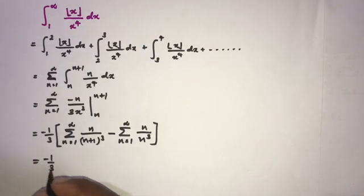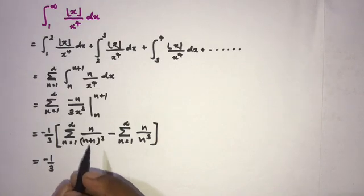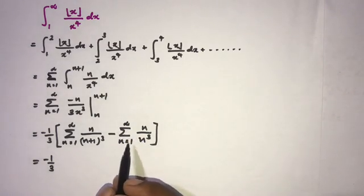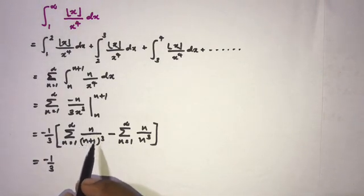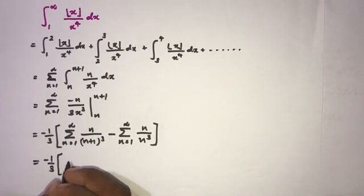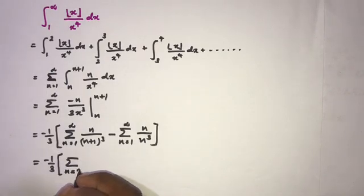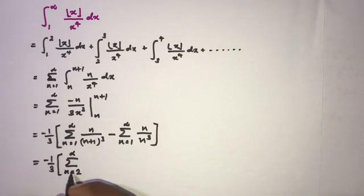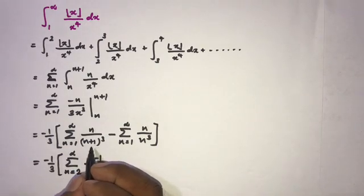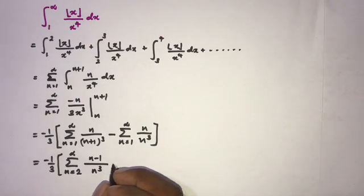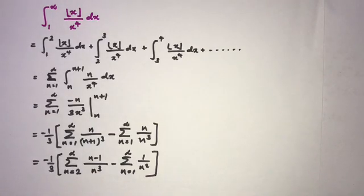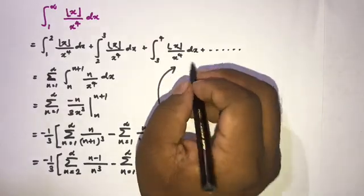We can use the Riemann zeta function here. For the term n/(n+1)³, I'm going to re-index starting from n equals two to infinity, reducing n by one, giving (n-1)/n³. Then we also have the sum from n equals one to infinity of 1/n².